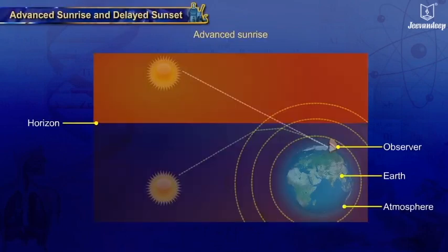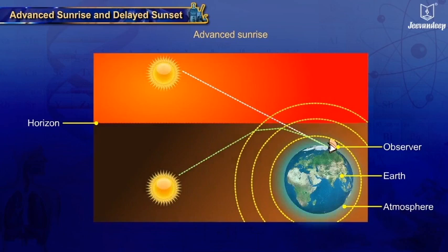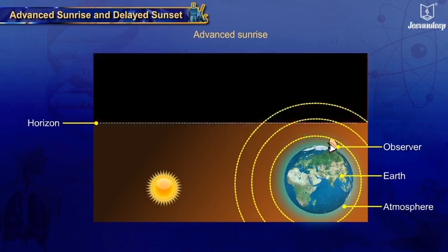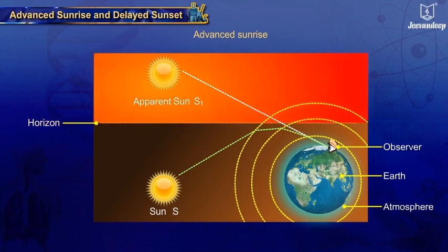Advanced sunrise and delayed sunset are the result of atmospheric refraction. The observer sees the sun two minutes before it actually crosses the horizon. As rays of light from the sun enter Earth's atmosphere, they follow a curved path due to refraction before reaching the observer. The sun S, which is still below the horizon, appears to rise to S1 just above the horizon on account of atmospheric refraction. The sun appears to rise 2 minutes earlier than it actually does.